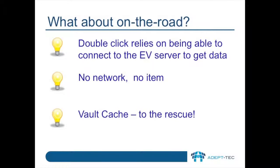When you double-click an archived item when Vault Cache is configured, the Enterprise Vault Outlook add-in will first try to find the item in your local cache and display it to you. If it's not found, it will try, if it can, to go to the Enterprise Vault server and get the data.